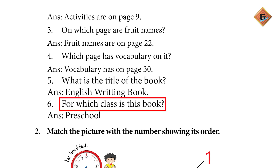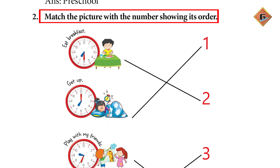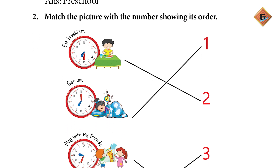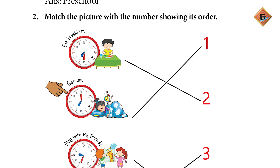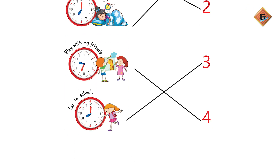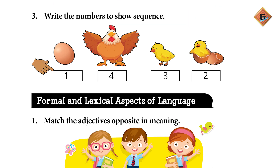Now page number 116, sequence picture. Pehli picture ko number 2 se match karein — sabse pehle dekhte hain kya hota hai. Sabse pehle 'get up' hoga, which is picture number 1. Then 'eat breakfast' ko number 2 se match karein. Then 'go to school' ko 3 se, and 'play with my friends' ko number 4 se. Now write the number to show the sequence: egg is 1, hatchling is 2, chick is 3, and hen is 4.